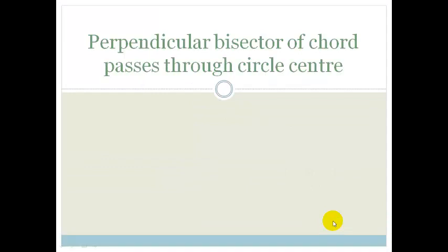Today's theorem is that the perpendicular bisector of a chord passes through the circle center. So what does that really mean? Let's think about this.